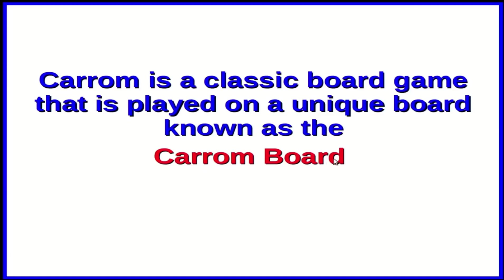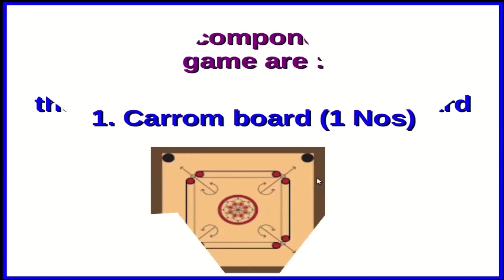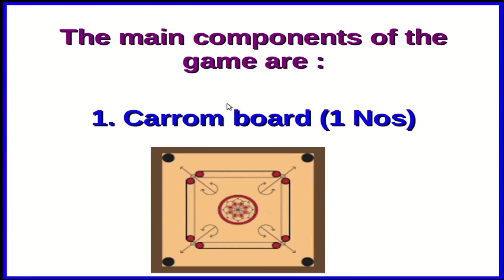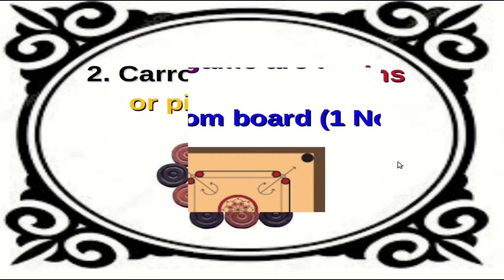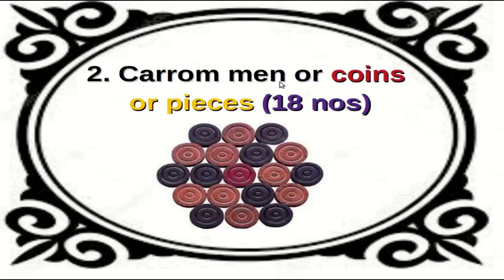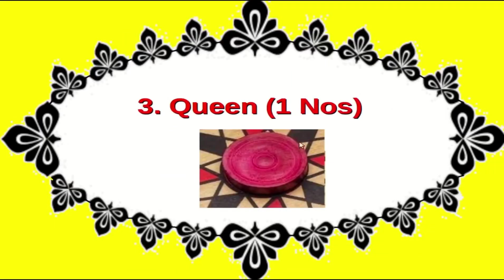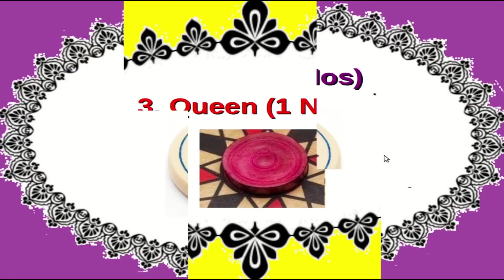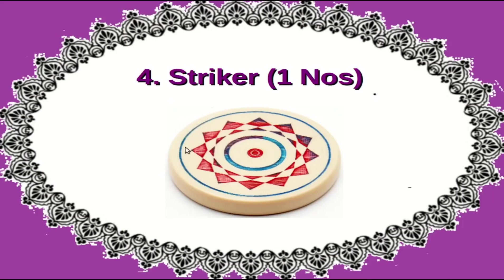Carom is a classic board game played on a unique board known as the carom board. There are four main components of the game: first, the carom board; then 18 carom men, alternately called coins or pieces; then a special piece known as the Queen which is red in color; and finally the striker.